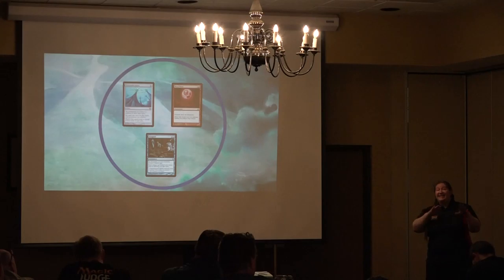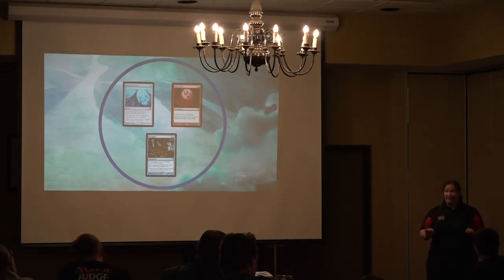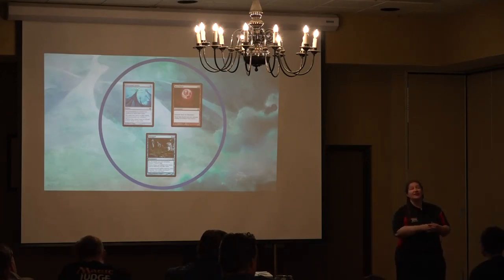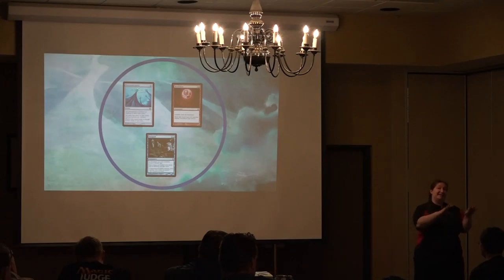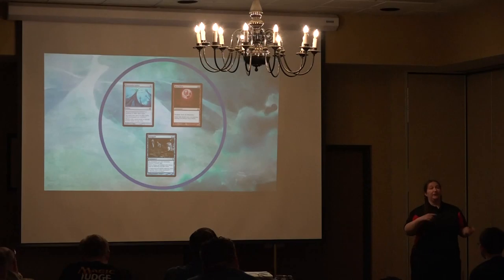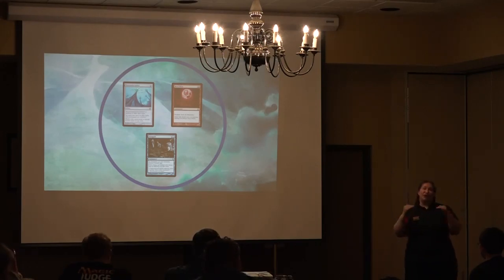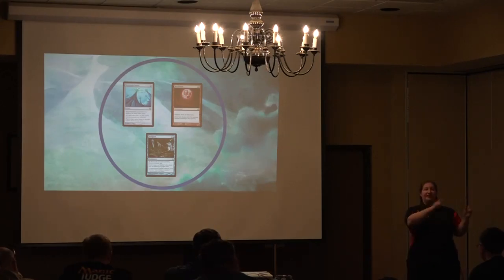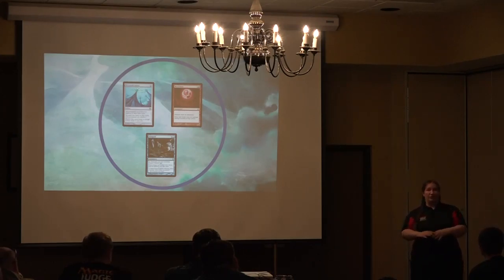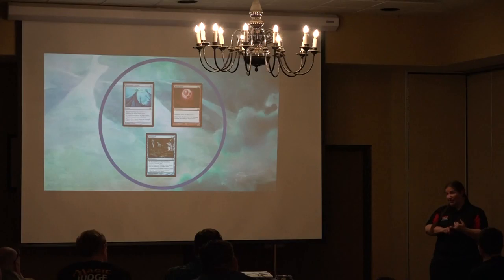What if there are two effects that both apply to the same type layer? If we have one that says all creatures are goblins and another that says all creatures are elves — any time we're in any layer and we have multiple things happening in that same layer, we're going to look at timestamp. We're also going to look at dependencies, but we're not really going to get to that in this seminar. Not very many things are dependencies, so most of the time you're just going to be looking at timestamp.